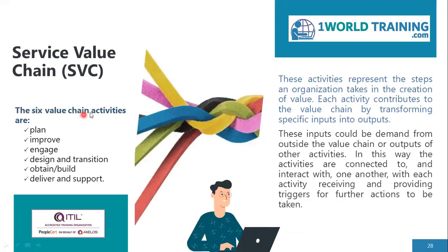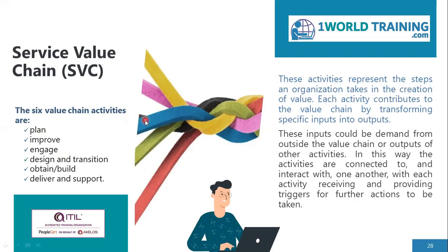Continuing with the service value chain, there are six value chain activities in the SVC: plan, improve, engage, design and transition, obtain or build, and deliver and support. These six activities represent the steps an organization takes in the creation of value. Each activity contributes to the value chain by transforming specific inputs into outputs — just like a process, which also takes certain inputs and transforms them into outputs. These activities do interact with each other. It is normally not possible that just one activity is included in a value stream; it will generally be a combination of activities, though it may remain just one activity in a single value stream.